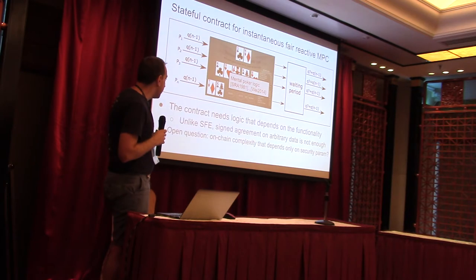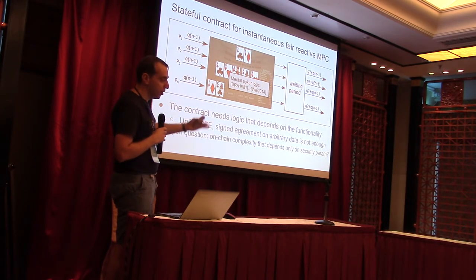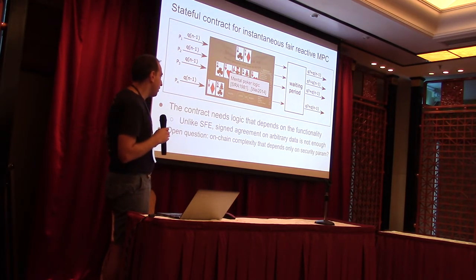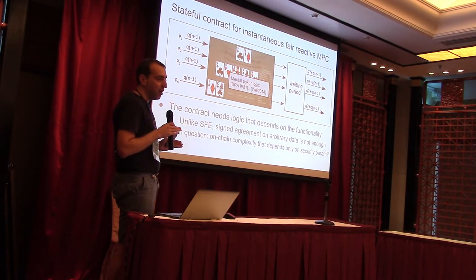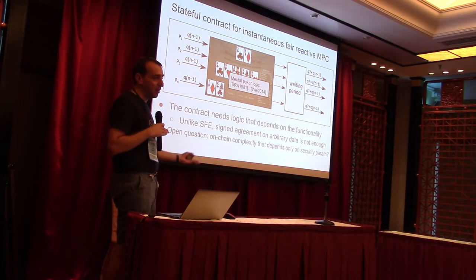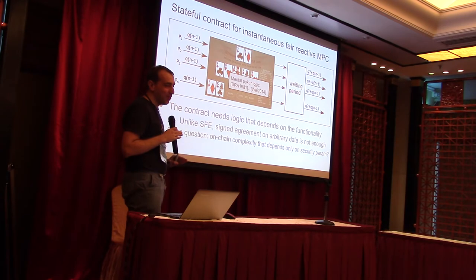For secure function evaluation, each iteration is the same — it's just about verifying that parties agreed to sign some data. But for reactive computation, Alice and Bob are playing poker and need to decide if one of them aborted. Maybe one is accusing the other and vice versa. You really need to put the logic of the poker game on the blockchain to decide who is right and who is wrong — otherwise it will not work.